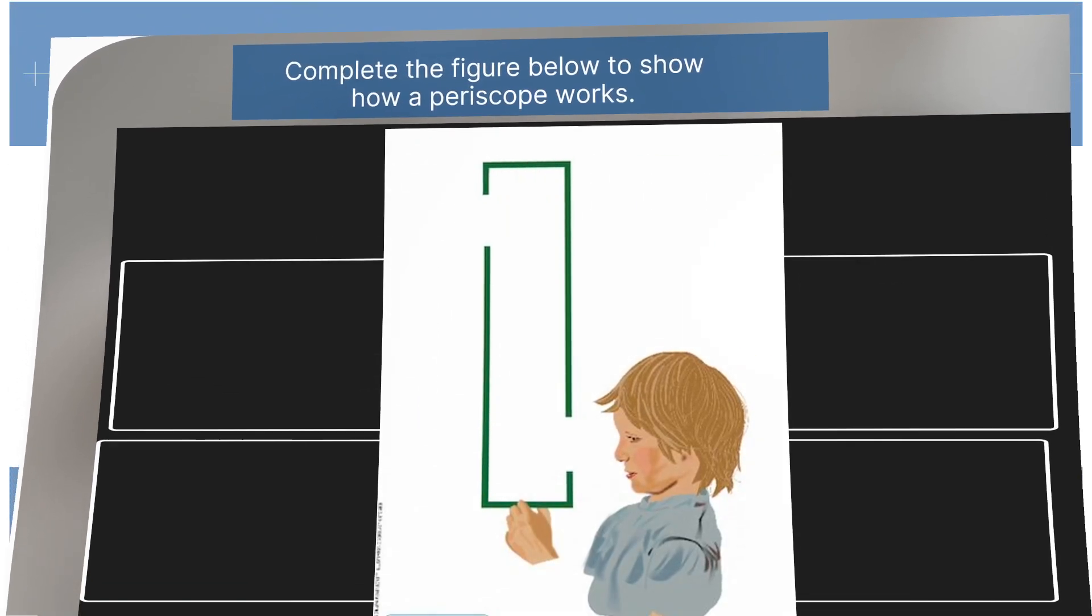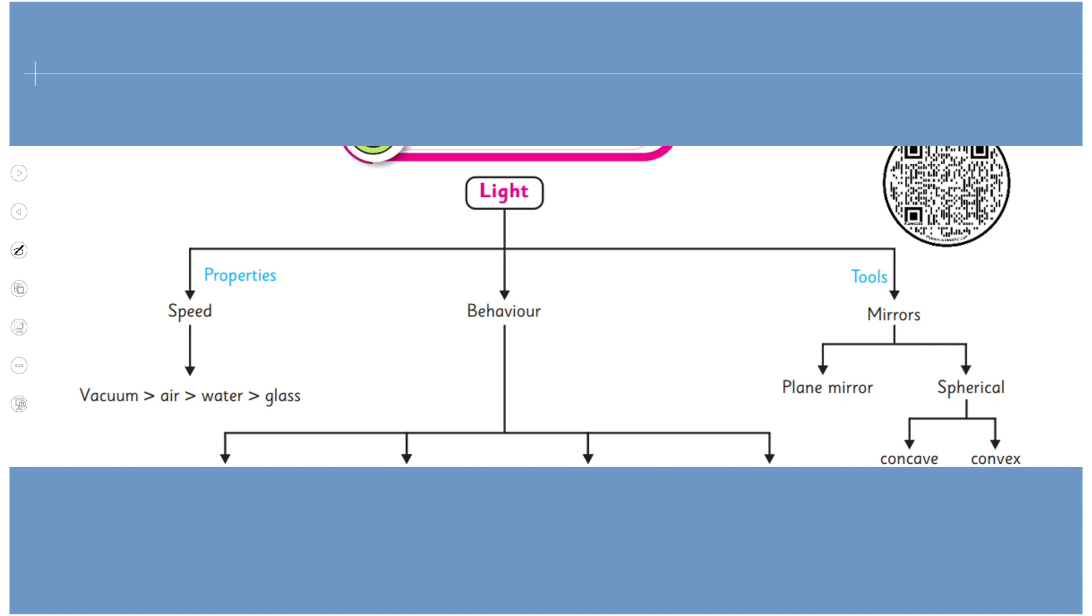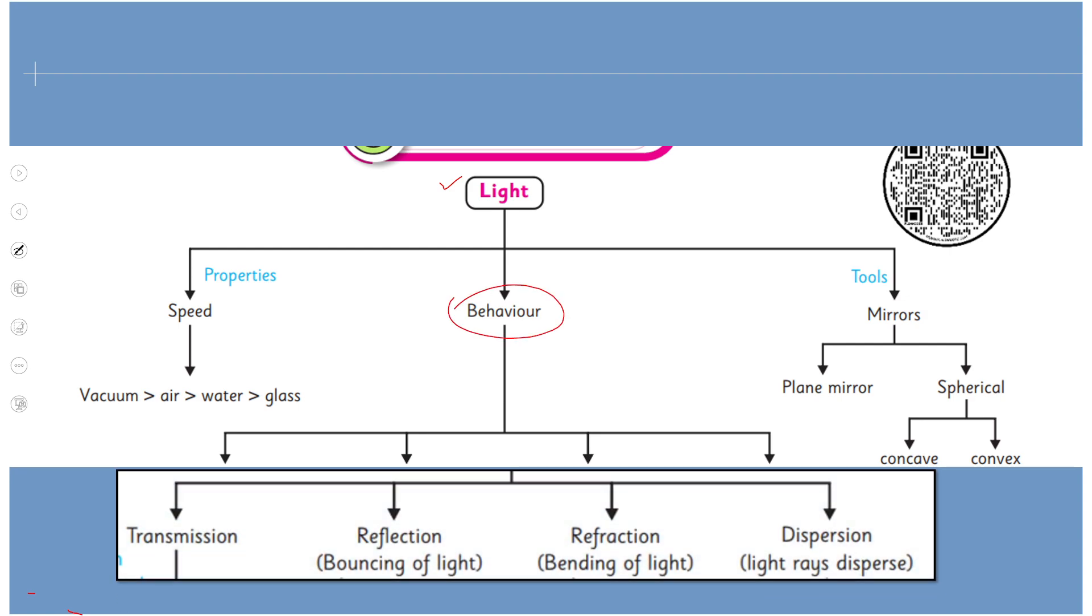Very good. So let's now revise the lesson. Humne is chapter ke under discuss kiya light ko and we define light as the source of electromagnetic radiation that has specific behavior. Wo specific behavior hai transmission of light, bouncing of light when it hits the mirror, or the bending of light when it changes its medium and undergoing dispersion.